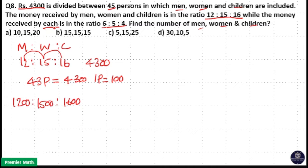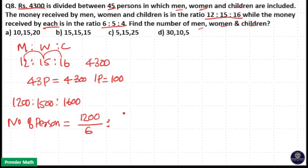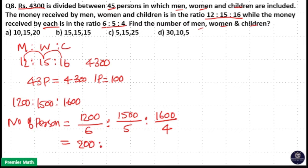Money received by each person is in the ratio 6 is to 5 is to 4. Number of persons equals total money divided by money received by each person. So: men = 1200 divided by 6 units; women = 1500 divided by 5 units; children = 1600 divided by 4 units. This gives 6 × 200 = 1200, 5 × 300 = 1500, 4 × 400 = 1600, so zeros cancel giving the ratio 2 is to 3 is to 4.